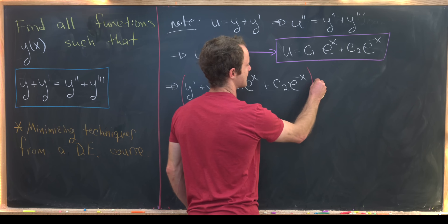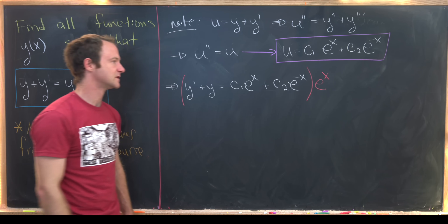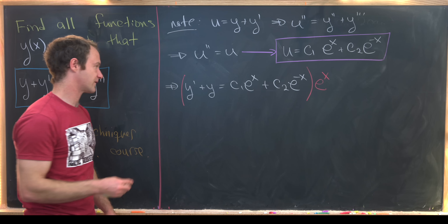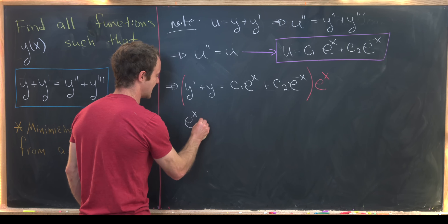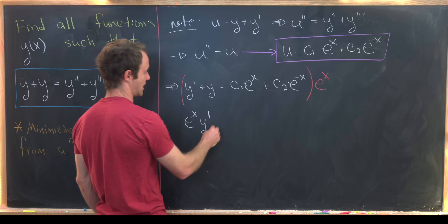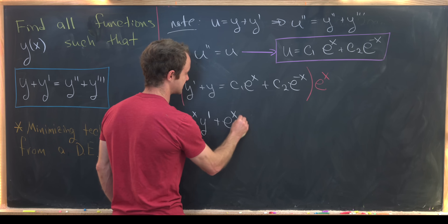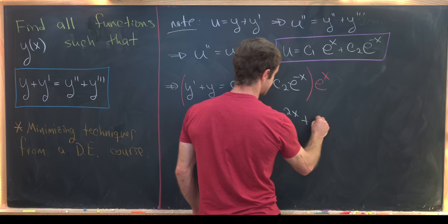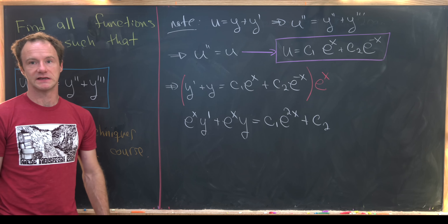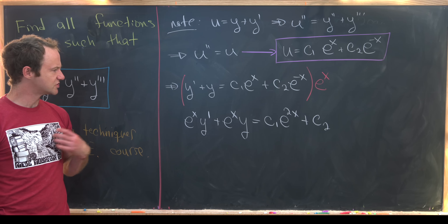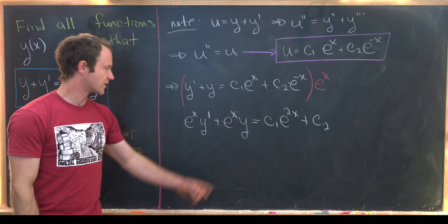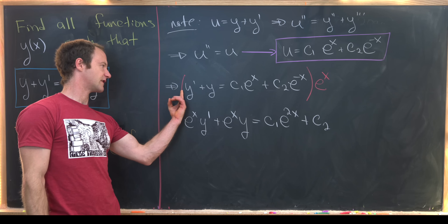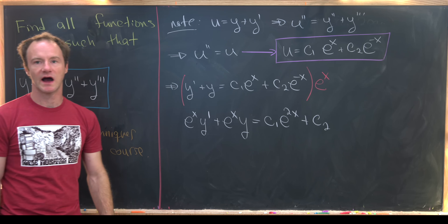The trick is to multiply everything by e to the x. So we get e to the x times y prime plus e to the x times y equals c1 e to the 2x plus c2. This works nicely because the coefficients of y prime and y on the left hand side are the same.